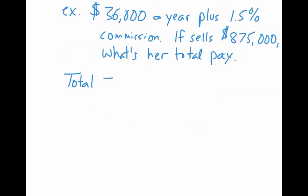So the total pay is going to be the base plus the commission. I'm just going to write that out to help us think through the problem. You may want to do that in your homework also. So we're trying to figure out the total. The base pay is? $36,000. Perfect. $36,000 plus.